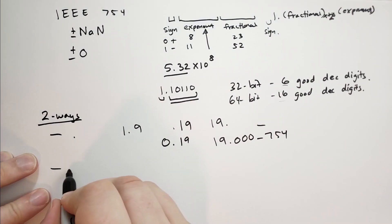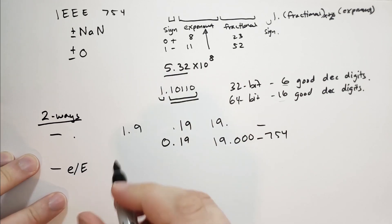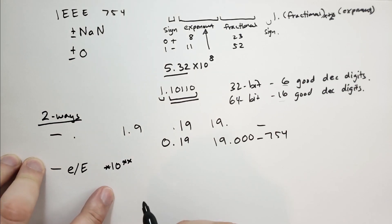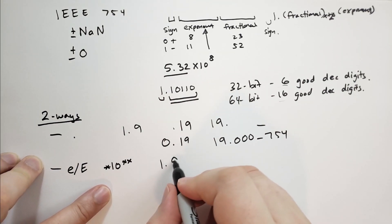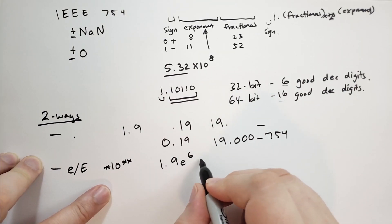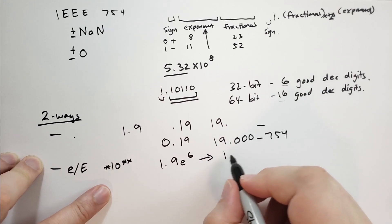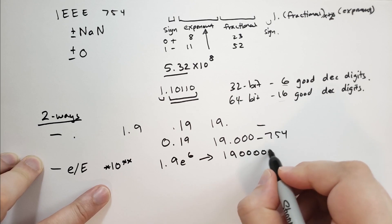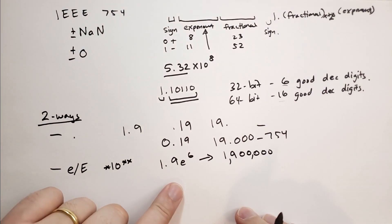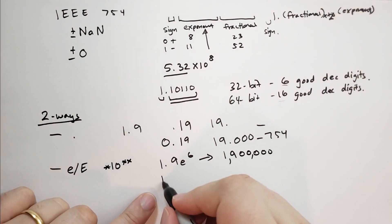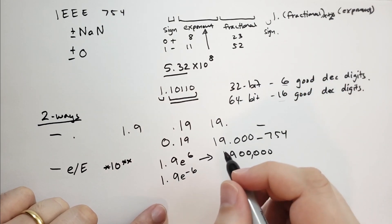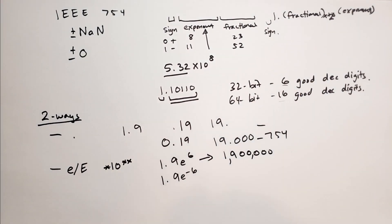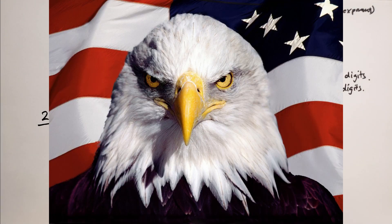The other way is we use an E or capital E. And what the E means is that means times 10 to the power of. So I'll just write it that way. So if I have 1.9 E6, that's going to give you, let's see, let's write 1.900 and we have six digits. So 1, 2, 3, 4, 5, 6, it's going to be 1.9 million.